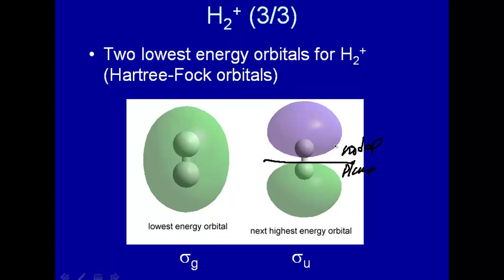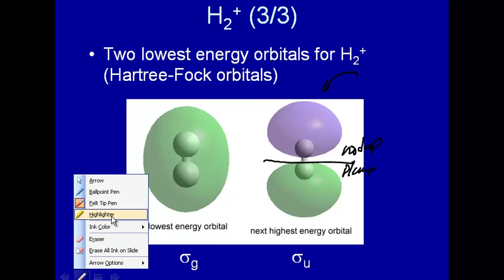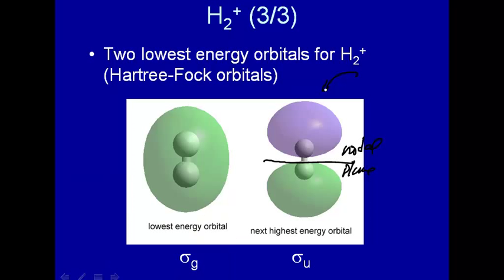This is called an anti-bonding orbital. Alright, so maybe you've heard of those, anti-bonding orbitals. Well, that's what they are, the solution to the Schrödinger equation, in which you have a nodal plane. This is now an anti-bonding orbital.